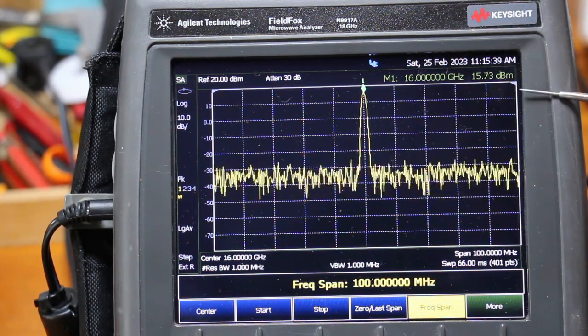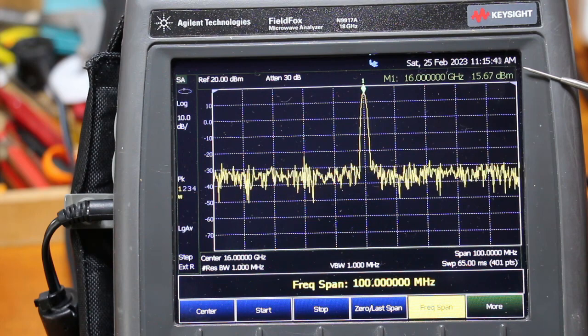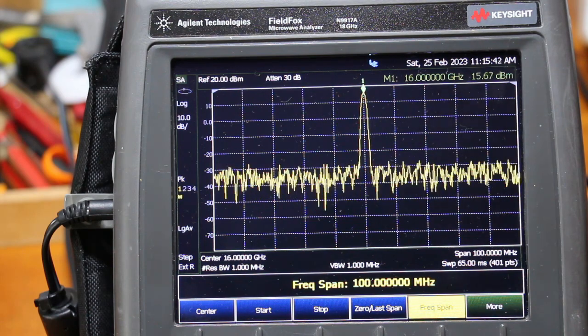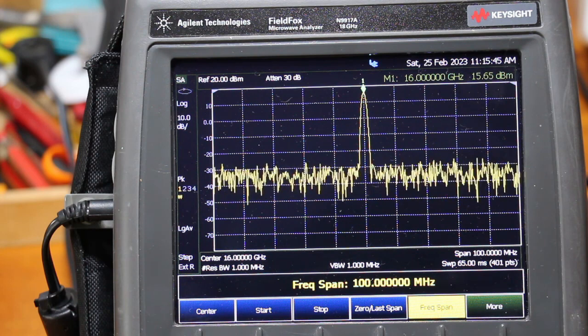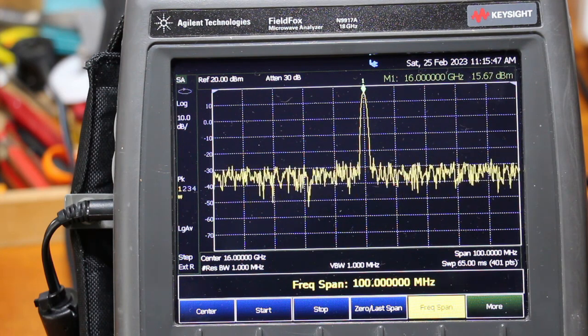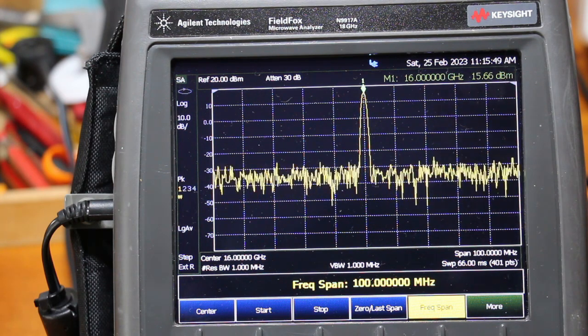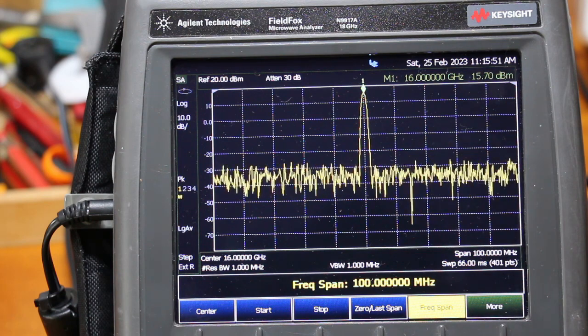Let's see what's happening with the spectrum analyzer. This is 15.7 dBm, a very nice level for a level 15 mixer. Let's have a look at the spurs.